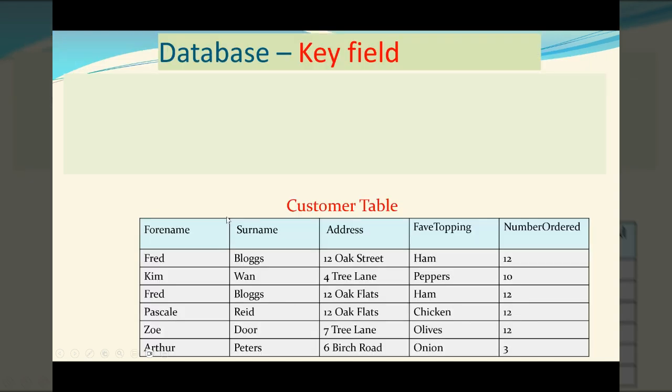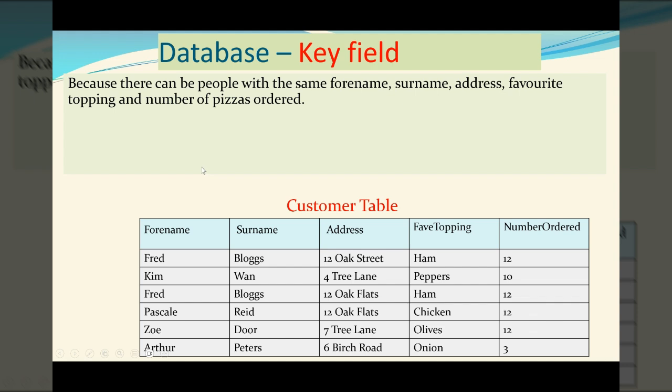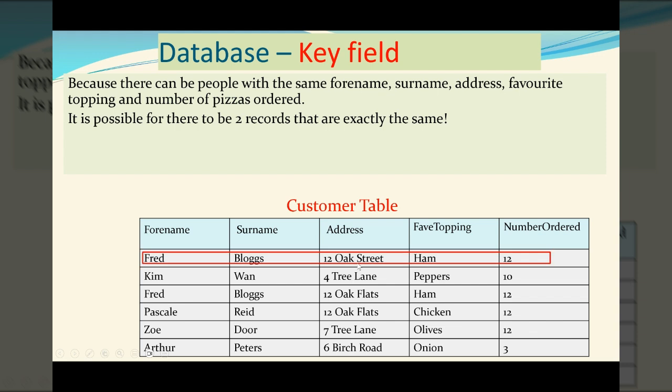We're not quite done. There's one more important keyword: key field. Because there can be people with the same forename, surname, address, favorite topping, and number of pizzas ordered, it's possible to have two records exactly the same.